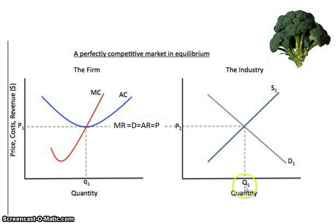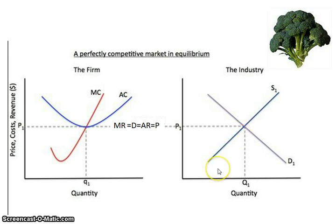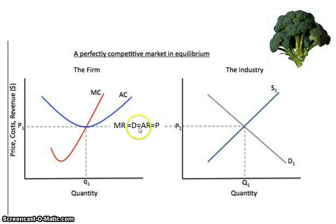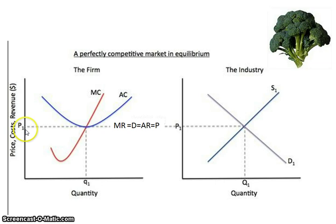You have your price and your quantity, and with that, the market is determining the price of what the product is that's being sold. We could use, for example, broccoli because that's an agricultural product — we don't have a brand name associated with it. And so with that, we have a price here of P1. The dotted line going across is a way to show that the firm is a price taker, getting its price from the industry.